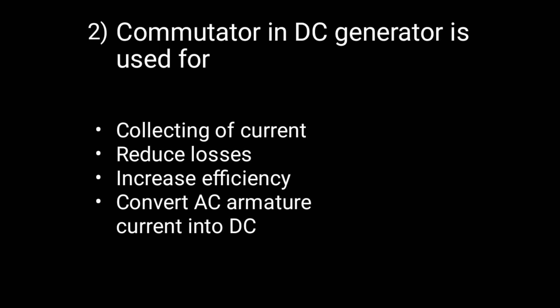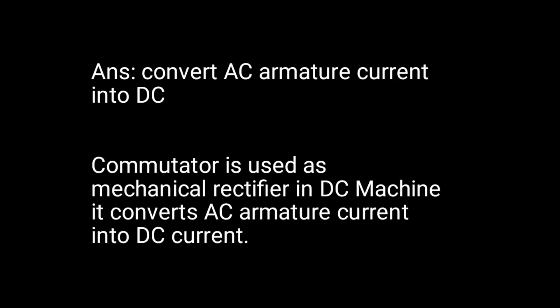Option D is correct: the commutator is used to convert AC armature current into DC. The commutator acts as a mechanical rectifier in a DC machine — it converts AC armature current into DC current.